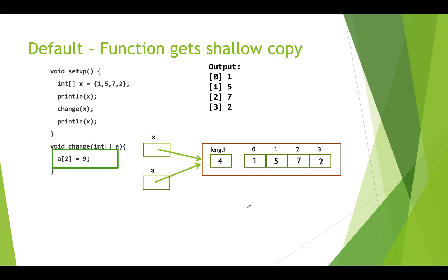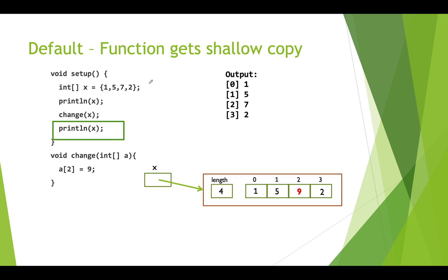What happens next is we do an assignment. We assign the value 9 to slot 2 of a — that's actually the third slot because we index from 0. Our array actually gets changed, and this is the original array on the heap because a points at that. We go to slot 2 and assign 9 to that slot — it used to be 7. Then when we return from the change function, we print out our array again, and this time we get 1, 5, 9, and 2.